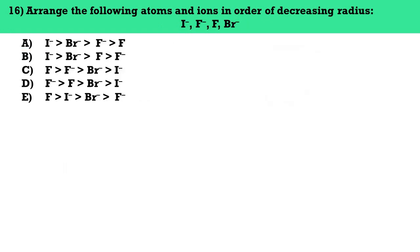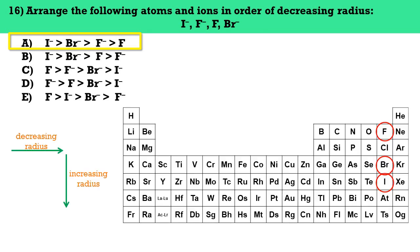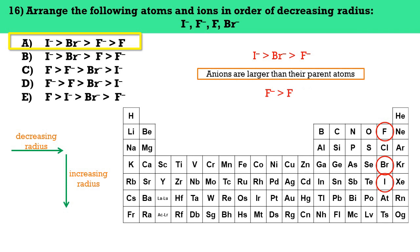Number sixteen, arrange the following atoms and ions in order of decreasing radius: I-, F-, F, and Br-. The answer here is letter A. Since fluorine, bromine, and iodine are in the same group, I- is larger than Br-, and Br- is larger than F-. Since anions are larger than their parent atoms, F- is larger than F. Therefore: I- > Br- > F- > F.